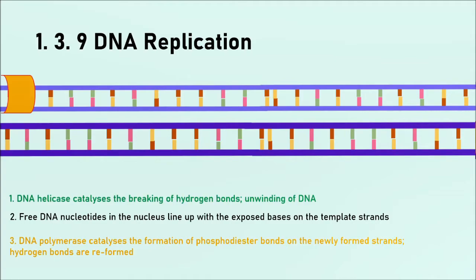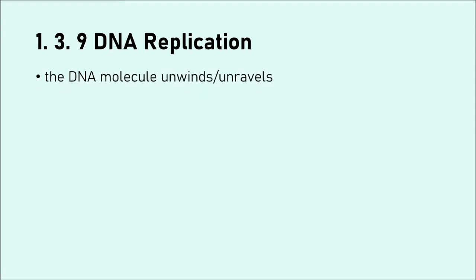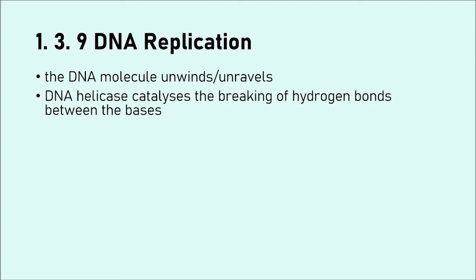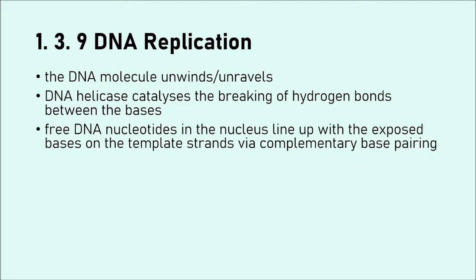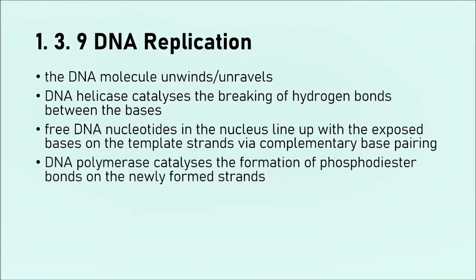Let's summarize using text, as we might do for an exam question. First, the DNA molecule unwinds or unravels — do not say 'unzips', that is wrong. Then the enzyme DNA helicase catalyzes the breaking of the hydrogen bonds between the bases. We now have two straight, unwound strands exposed to free nucleotides in the nucleus, which come along and line up with the bases on the template strands via complementary base pairing — A-T and C-G. Then the enzyme DNA polymerase catalyzes the formation of phosphodiester bonds between the nucleotides on the newly formed strands.